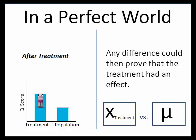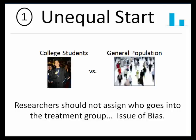If that were the case, then any difference between the treatment mean and the population mean after the treatment was applied could be interpreted as proof that our manipulation had an effect — that drinking 24 ounces of vitamin water, in addition to your regular diet, actually improved IQ scores. But it is not the case. Our treatment group and our population are not going to start identical in terms of IQ. When we first create our treatment group by selecting it from the population, we have to be careful not to inadvertently make this situation even worse.